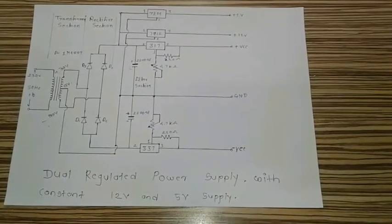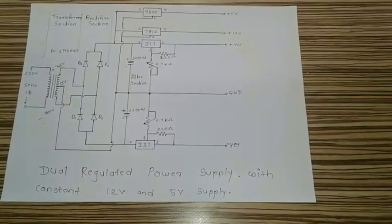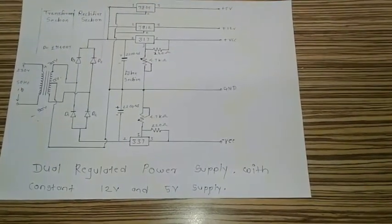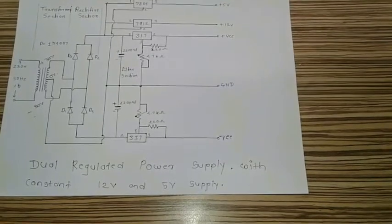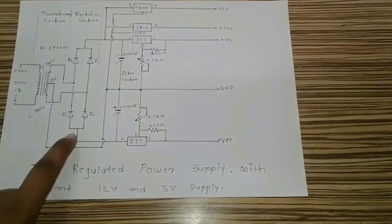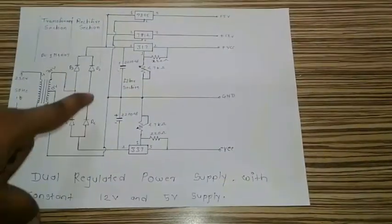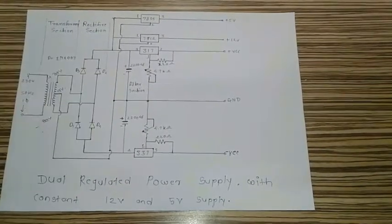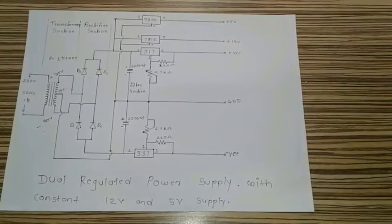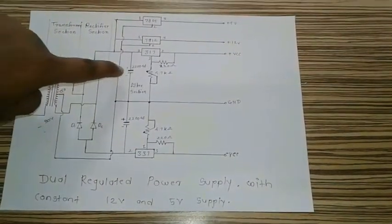In the transformer section we have used a 30V center tap transformer. After that, in the rectifier section, four diodes are used and the diode number is 1N4007 — this is the bridge rectifier circuit. After that, in the filter section, we have used two capacitors with a value of 2200 microfarad rated at 50V.